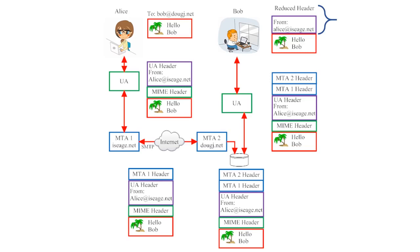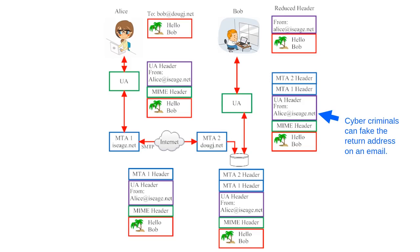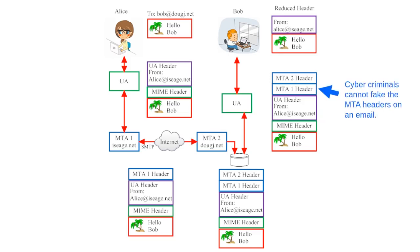Sometimes cybercriminals will send forged emails that pretend to come from a trusted source — say, your workplace or your grandma. But if you learn to read email headers, you can check for yourself which message transfer agents the email originated from. Cybercriminals can fake the return address on an email, but they cannot fake the message transfer agent headers. If you receive a suspicious email that claims to be from your grandma, it's possible to check the detailed header to determine whether it really came from the same message transfer agent as your grandma's other emails.